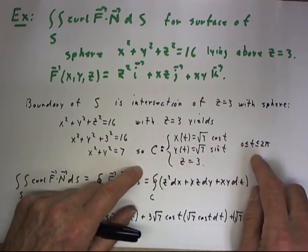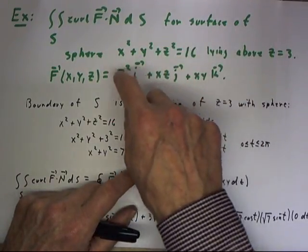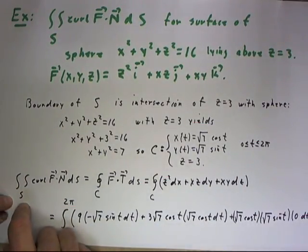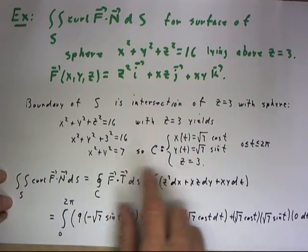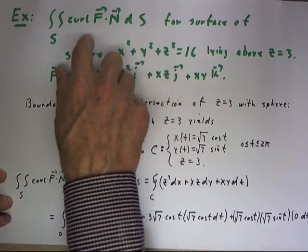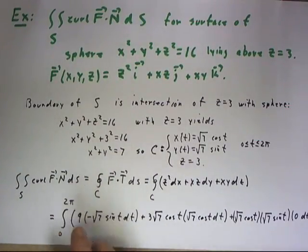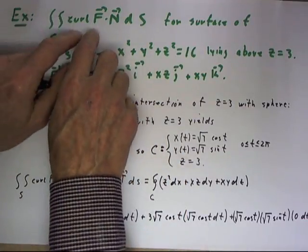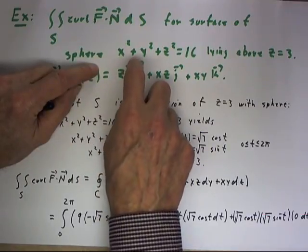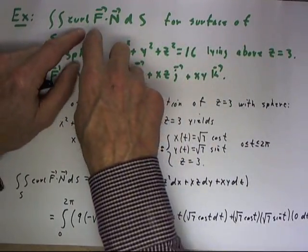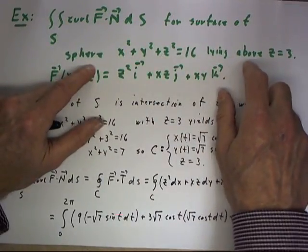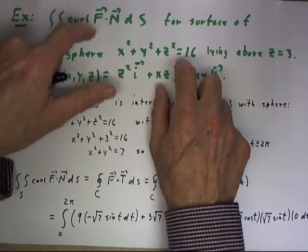Now, having parameterized the boundary of this surface, we can select any surface that's enclosed by that boundary. Any surface that has the same boundary is going to give us the same result. It would be not impossible but a little bit complicated to figure out the normal vector for this sphere and the limits on the surface and all of that stuff.